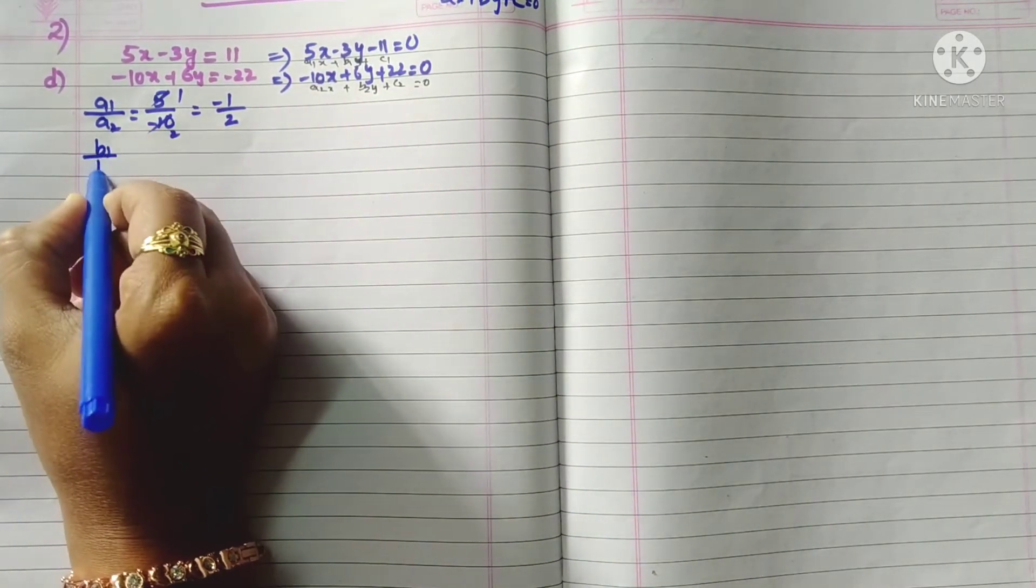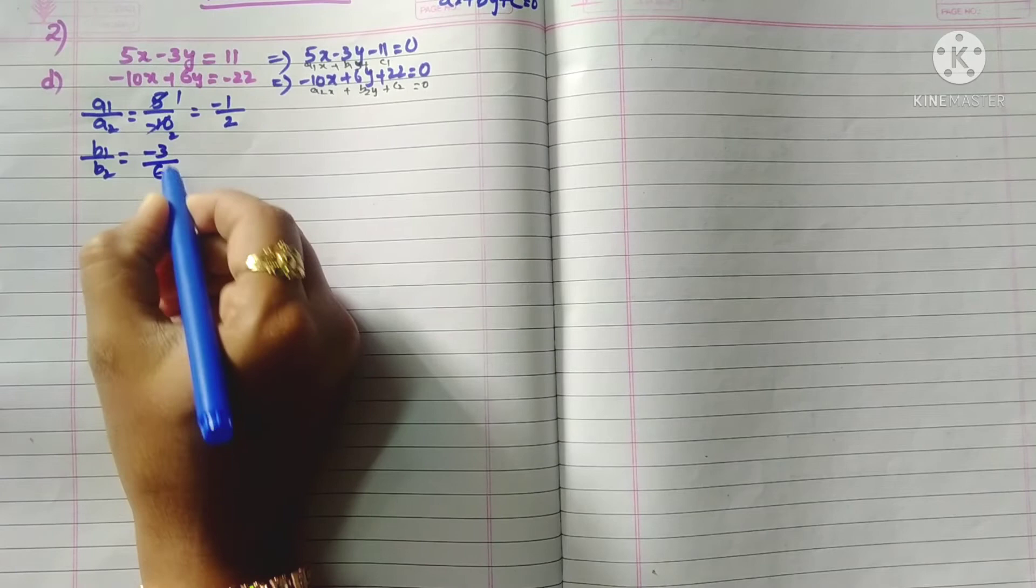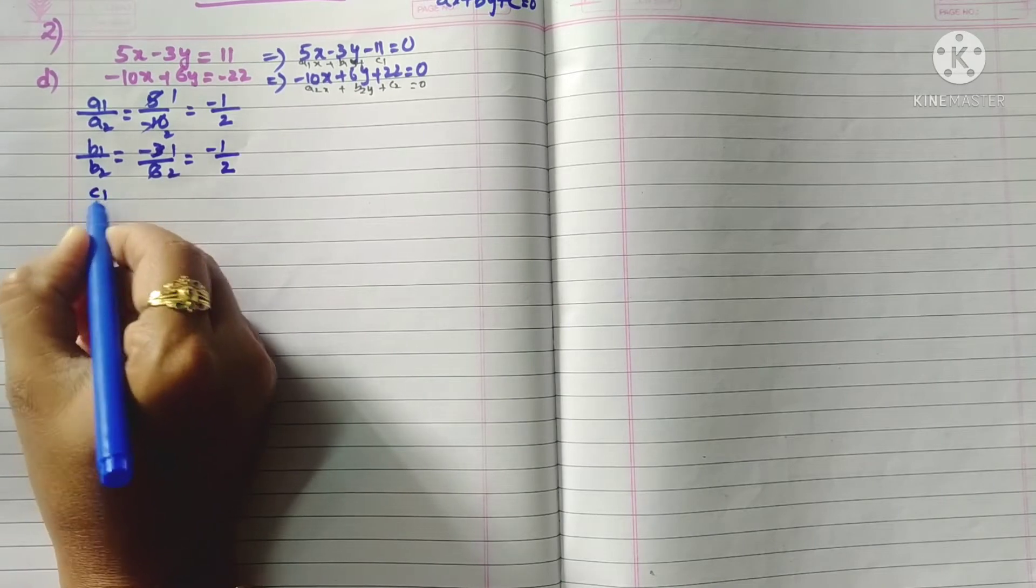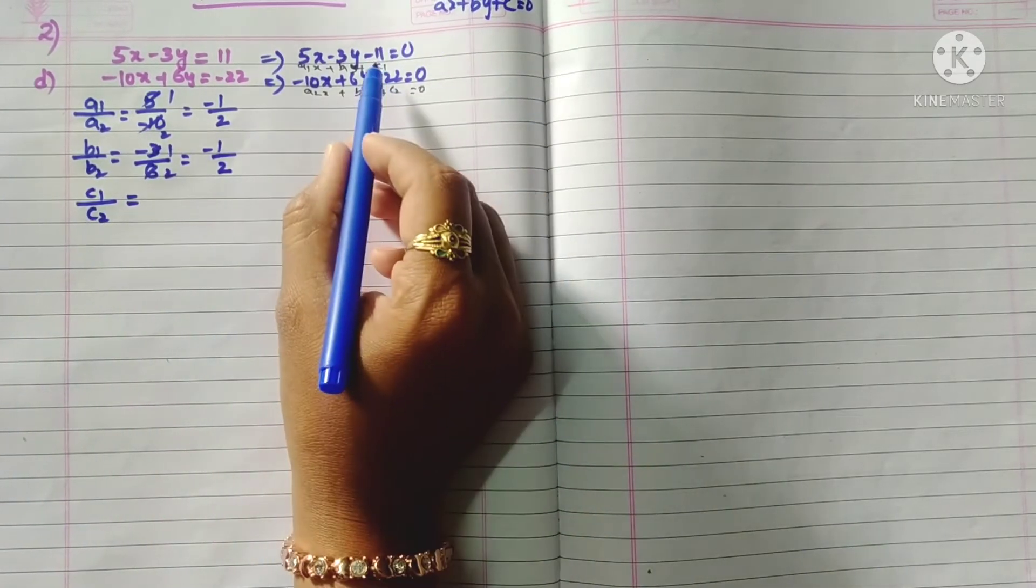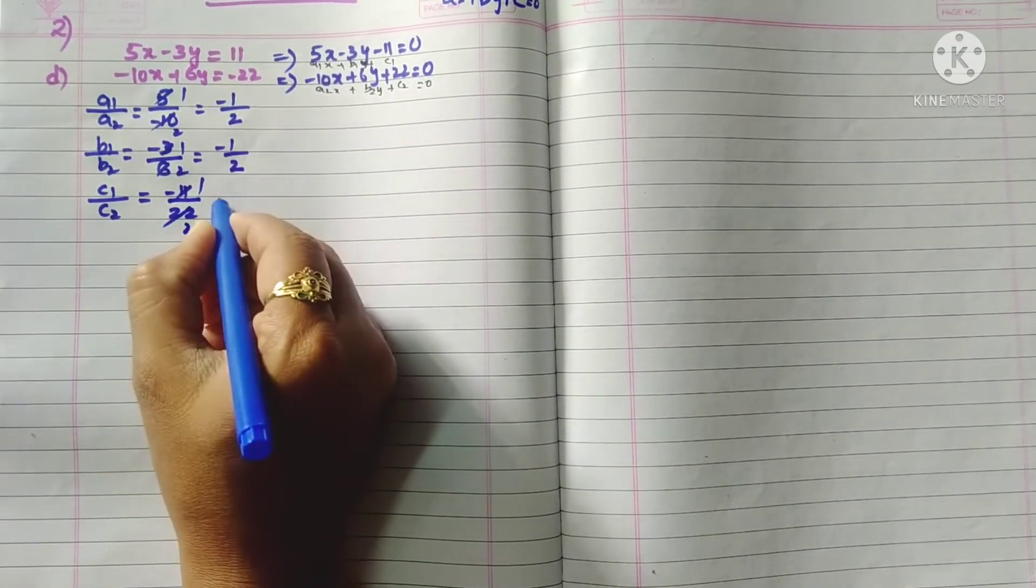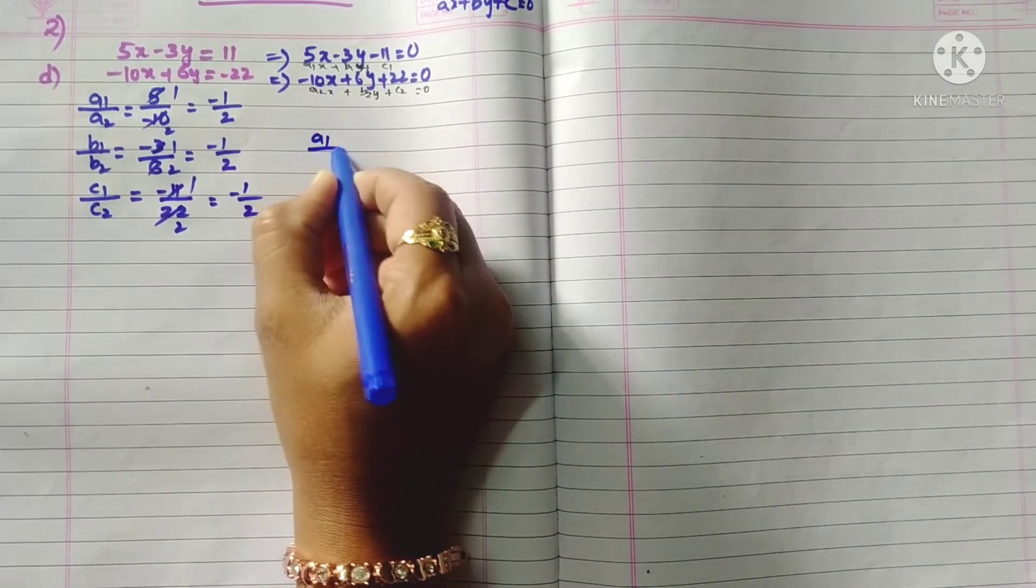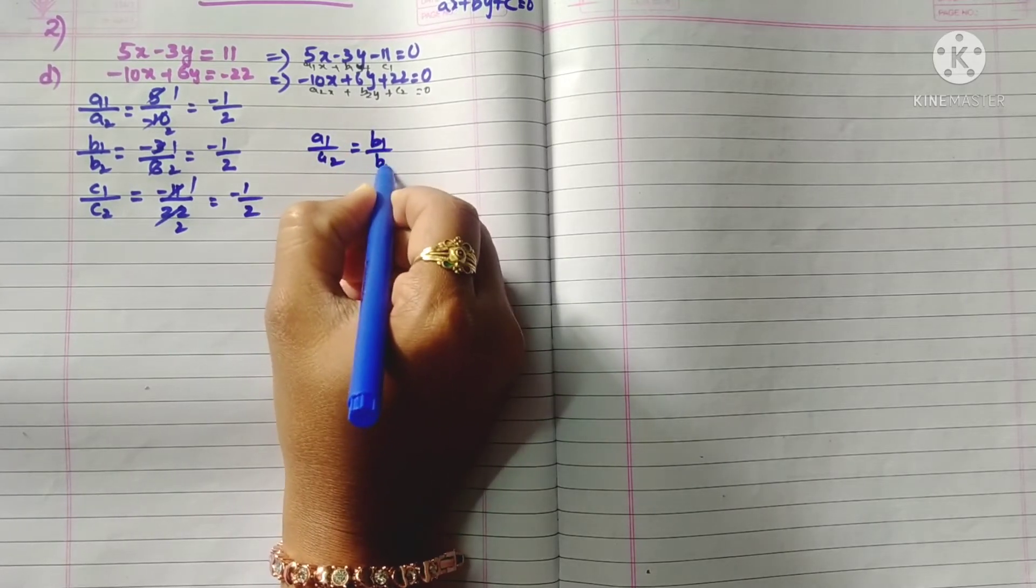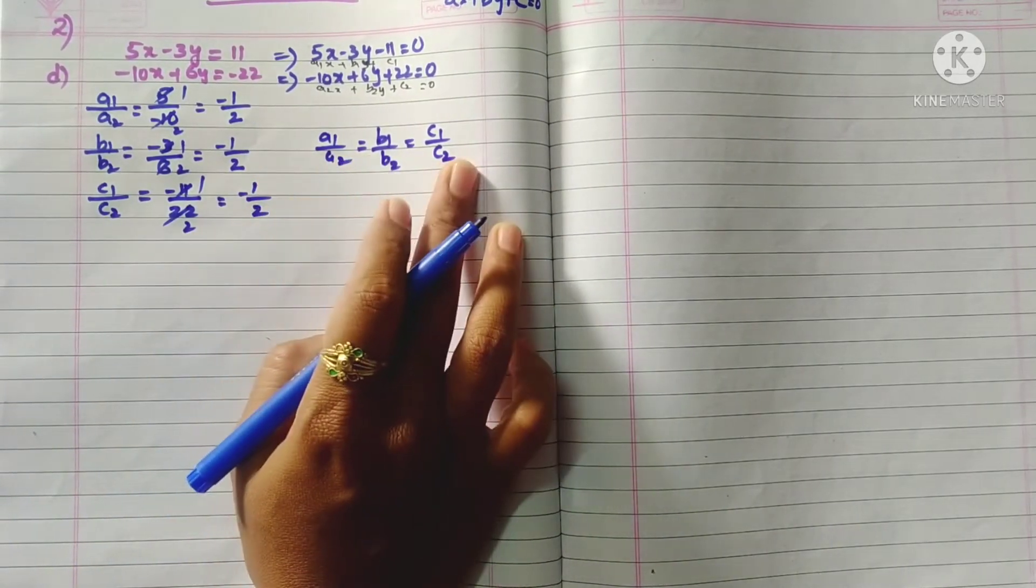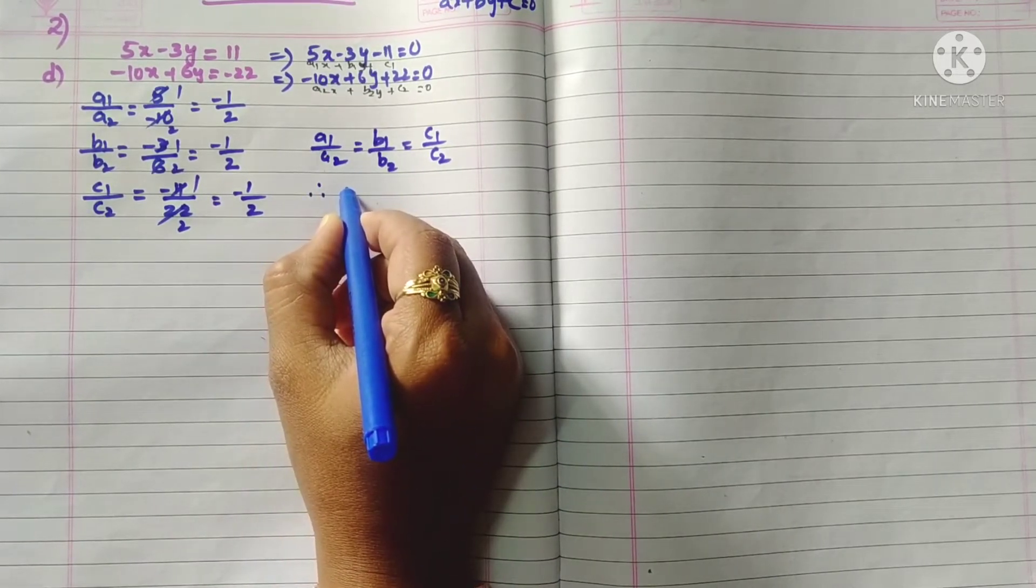Similarly c1 by c2: c1 is minus 11, c2 is plus 22, so minus 1 by 2. Here a1 by a2 equals b1 by b2 equals c1 by c2. All three ratios are equal, so they are coincident lines.